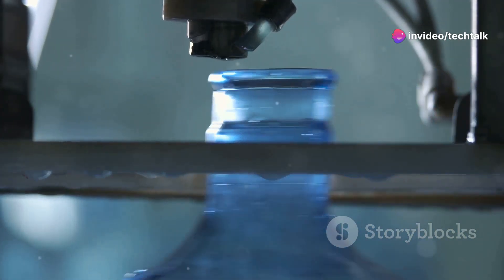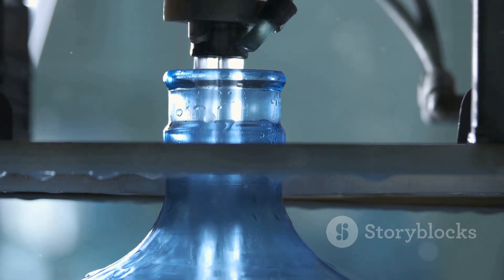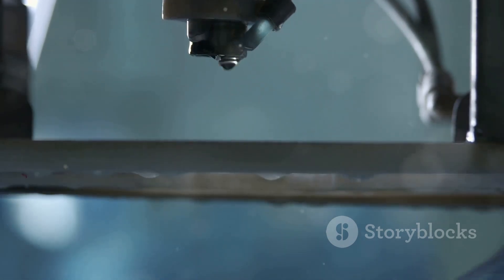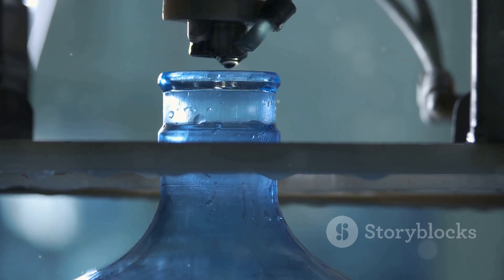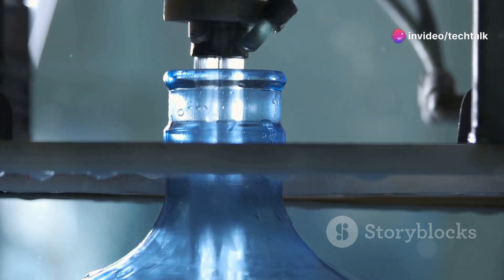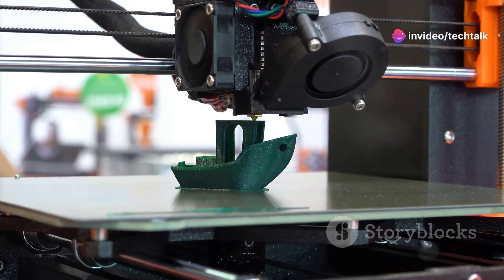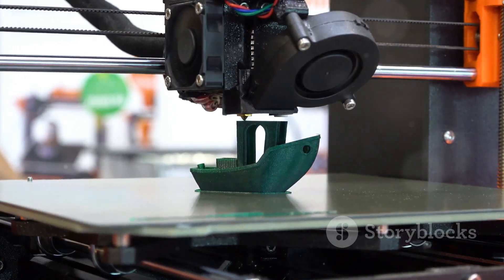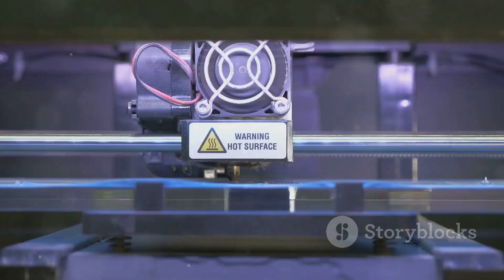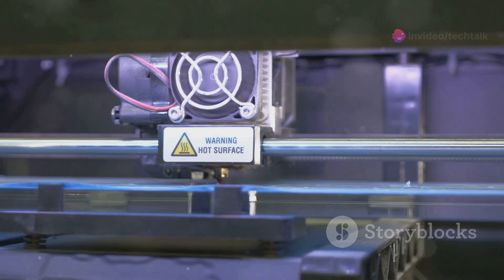At the heart of this transformation lies 3D printing, a technology poised to reshape the manufacturing landscape. 3D printing, also known as additive manufacturing, builds objects layer by layer from a digital design. Unlike traditional subtractive manufacturing, which involves cutting away material, 3D printing adds material precisely where it's needed. This fundamental difference opens up a world of possibilities for manufacturers.